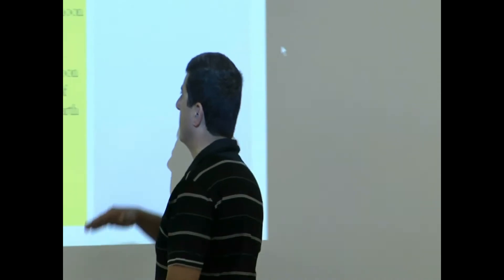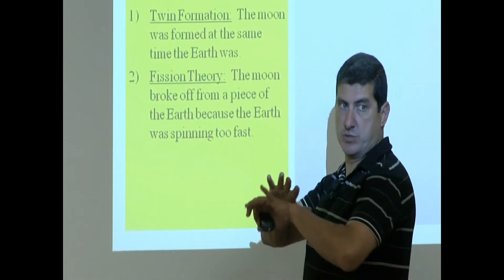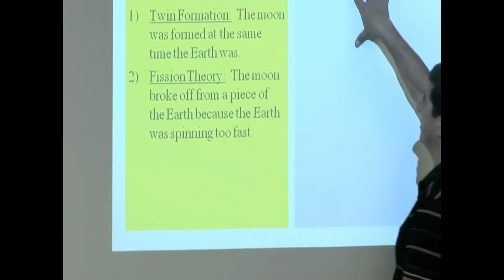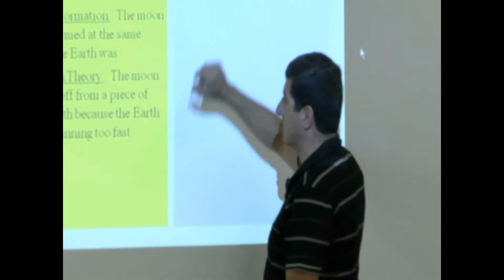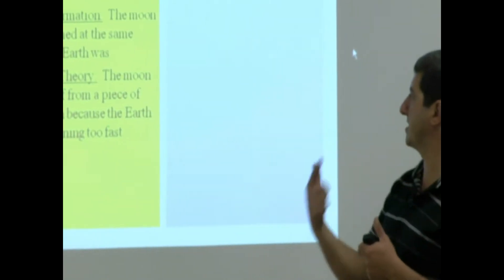So there's a good reason why each of these theories is annulled. They don't accept it. The one that they accept is going to be the one that I write over here. Fission theory. The moon broke off from a piece of the Earth because the Earth was spinning too fast. So when it was first forming, the moon was separated.